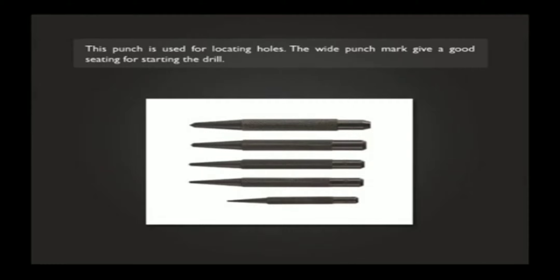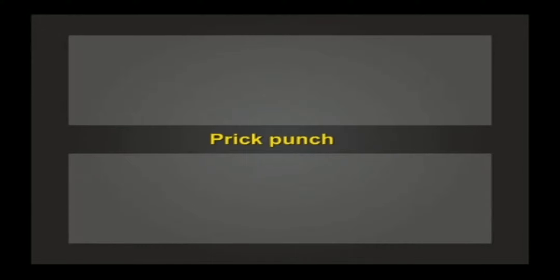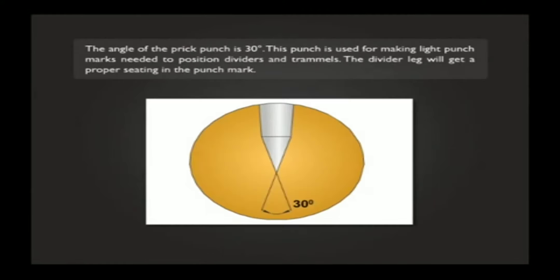The wide punch mark gives a good seating for starting the drill. The angle of the prick punch is 30 degrees. This punch is used for making light punch marks needed to position dividers and trammels. The divider leg will get a proper seating in the punch mark.